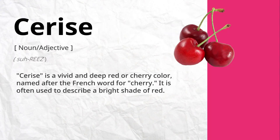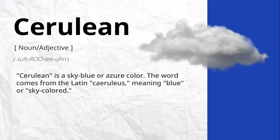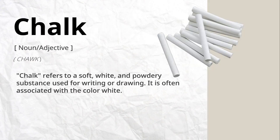Cerise is a vivid and deep red or cherry color, named after the French word for cherry. It is often used to describe a bright shade of red. Cerulean is a sky-blue or azure color. The word comes from the Latin caeruleus, meaning blue or sky-colored.